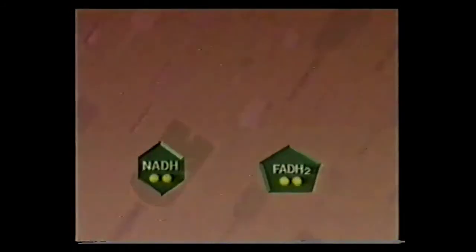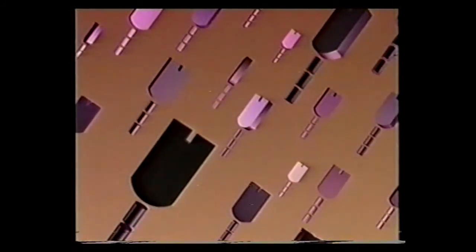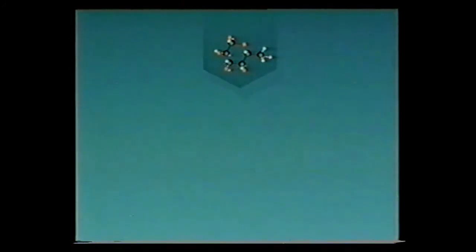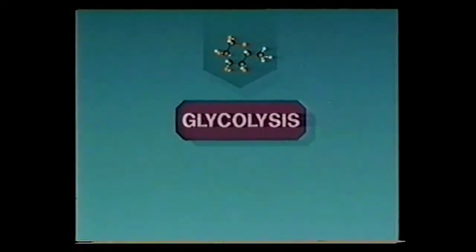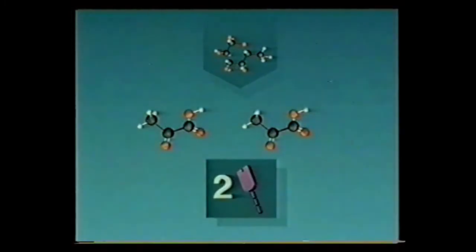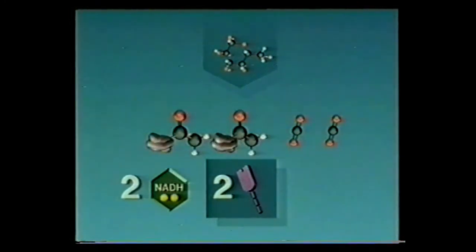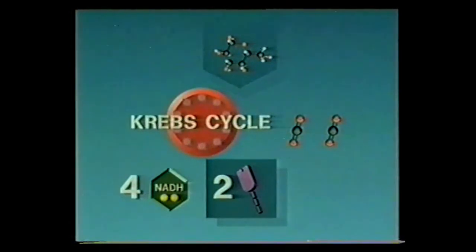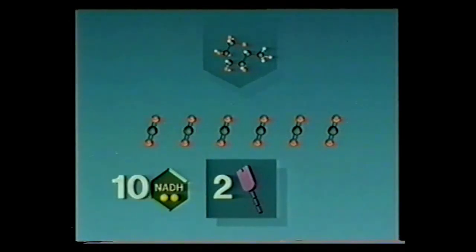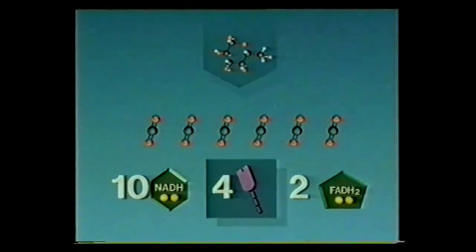Both NADH and FADH₂ carry energetic electrons that will be used to store energy in ATP. Let's return to the original molecule of glucose and review: glycolysis generated two pyruvates, two ATPs, and two NADHs. The two pyruvates entered oxidative decarboxylation and produced two acetyl-CoA molecules, two CO₂, and two more NADHs. Since two acetyl-CoAs are engaged in the Krebs cycle — think of the cycle turning twice — the final products are six CO₂, ten NADH, two FADH₂, and four ATPs.